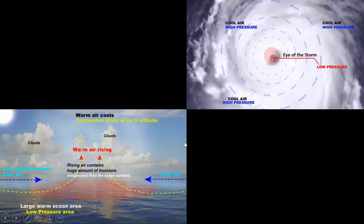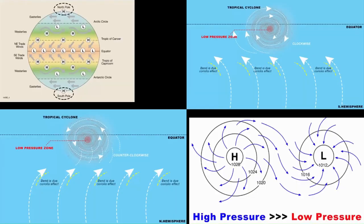These two slides show a mapping view and a cross-section view. In the mapping view, the hot dot means the low pressure zone where temperature is very high. Cold air moves around it, and the hot air moves upward forming clouds. The clouds move further away, precipitate, cool down, and the cycle continues — the cyclone grows and its intensity increases over time.